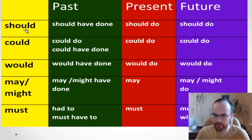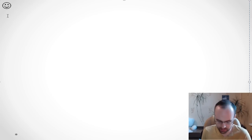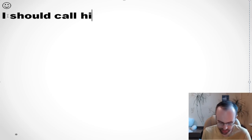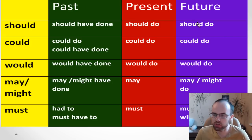Let's look at the first modal verb: should. How do we use this modal verb? Talking about the past, present, and future. Let's start with present simple. For example, I can say 'I should call him now' — it's about the present. If I want to say something about the future using this modal verb, I say should plus verb.